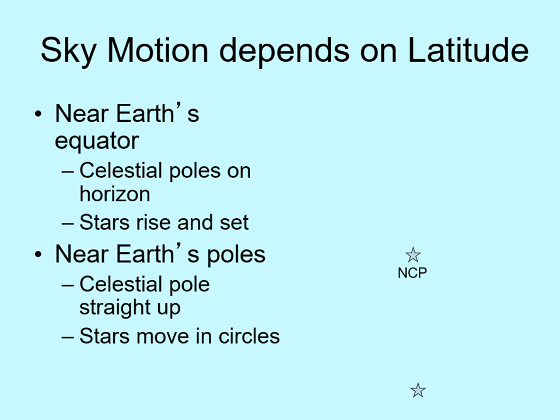So at the poles, stars don't rise and set — they just move in circles in the sky. We'll talk more about what the Sun does when we get to seasons.